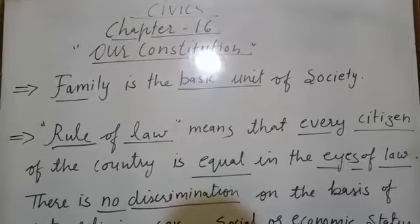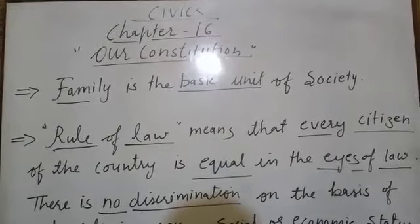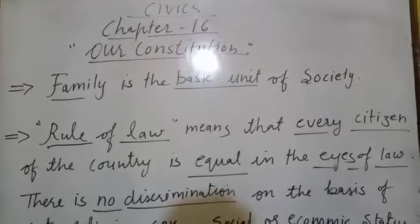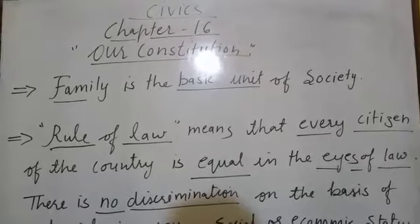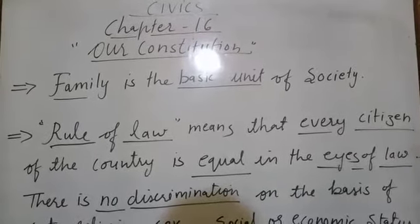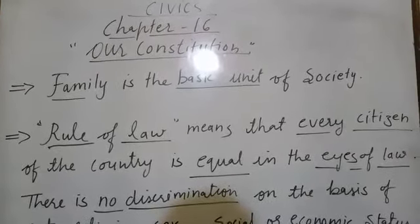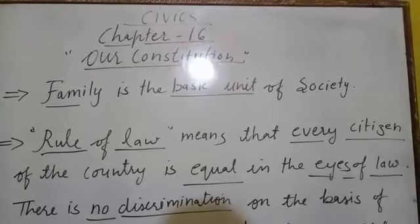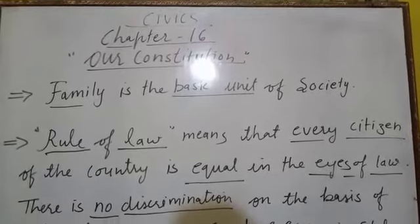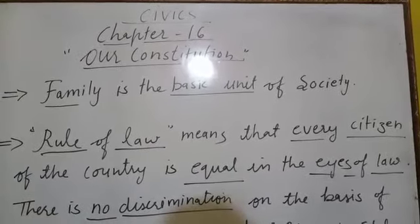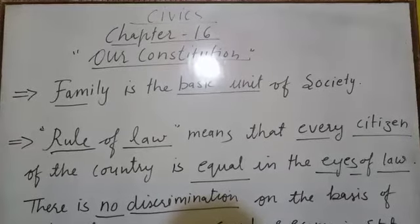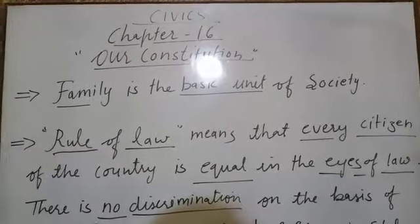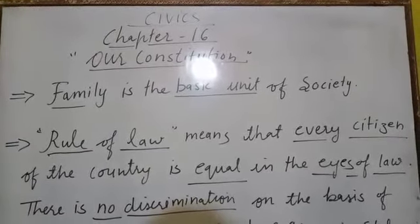Do we have such rules in society also? Yes, we do. Family is the basic unit of society — a very small part of it. In society, different institutions and organizations are found, and for proper and smooth functioning, they have to follow certain rules and laws. Every institution and organization has some rules and laws which are recognized by our country.